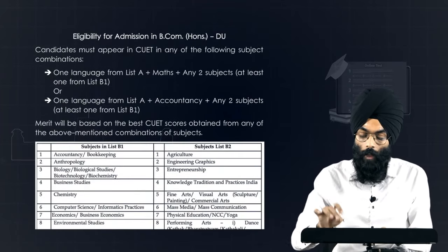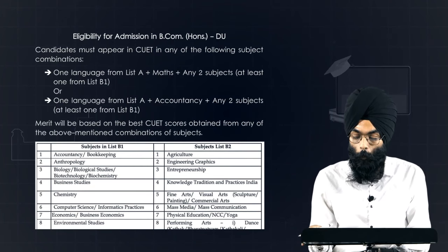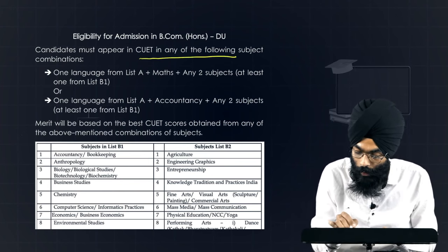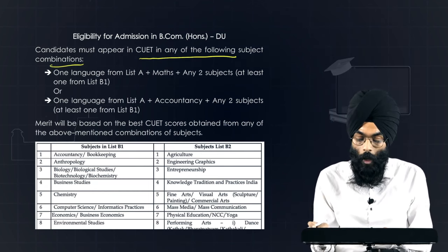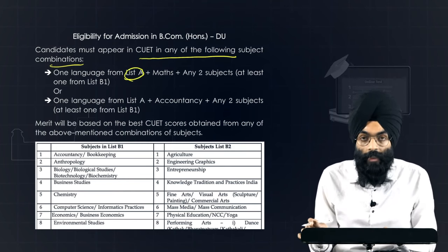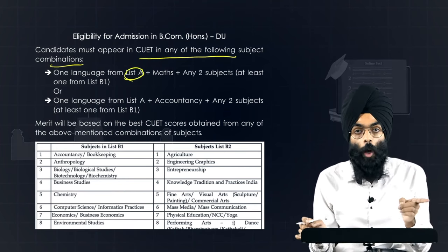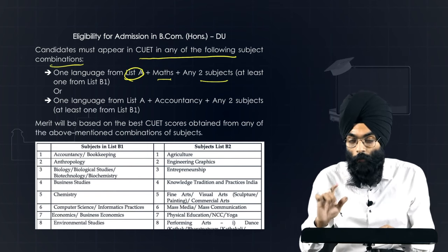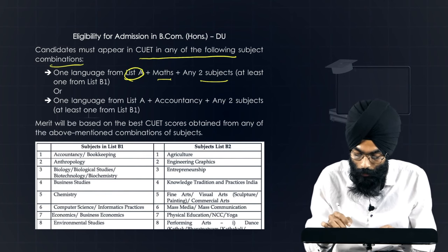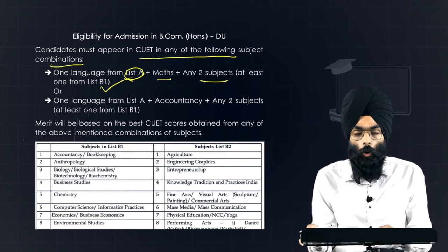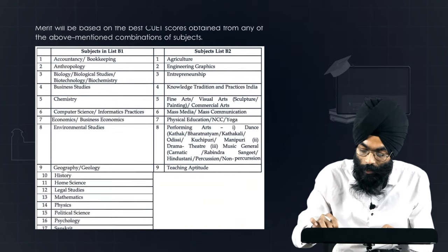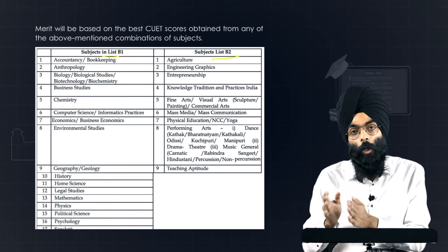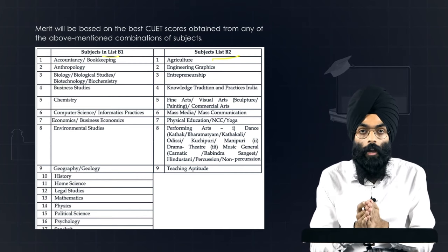Let me give you an example. This is the eligibility criteria for admission into B.Com Honours in DU — Delhi University. The DU bulletin mentions that candidates must appear in CUET in any of the following subject combinations. They require one language from List A, which is Section 1A and 1B, and then maths and any two subjects — at least one from List B1. B1 and B2 are subdivisions of the 27 domain subjects: B1 covers major subjects like accountancy, business studies, and economics, while B2 covers optional subjects like physical education and fine arts.